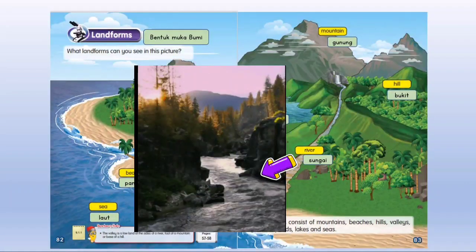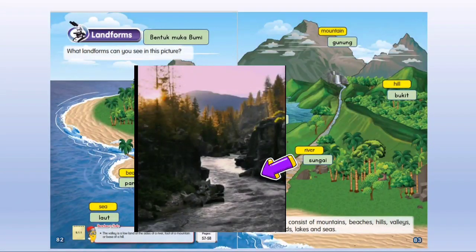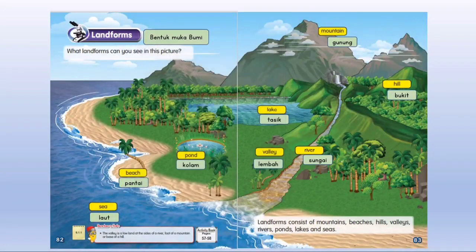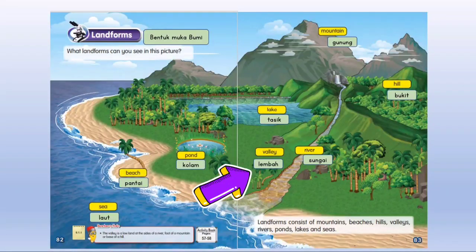This is a river — Sungai. The valley — lembah. The valley is a low land at the side of a river, at the foot of a mountain, or at the base of a hill. Lembah adalah kawasan rendah di sebelah sungai, di kaki gunung, atau di kaki bukit.